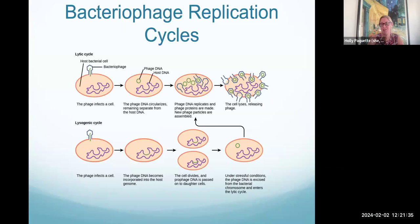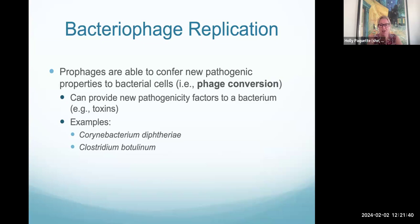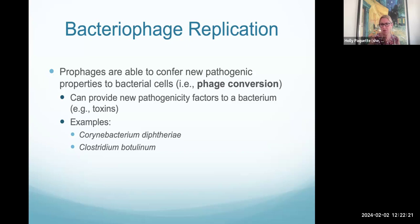Hopefully that makes sense. With bacteriophage replication, one of the things we often think about is that prophages, when they are in a bacterial cell's DNA, can sometimes do what we call phage conversion. This can sometimes provide new pathogenicity factors to a bacterium, making that bacteria more dangerous to us. Some examples would be Corynebacterium diphtheriae, which causes diphtheria, and Clostridium botulinum, which causes botulism. If either of these two types of bacteria have a prophage in them, they're likely more dangerous to us. It's almost like you've poked a bear — phage conversion can make bacteria even more toxic to us.